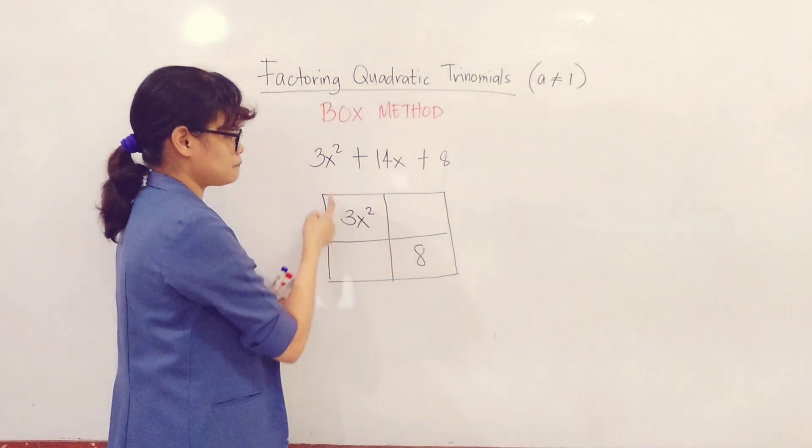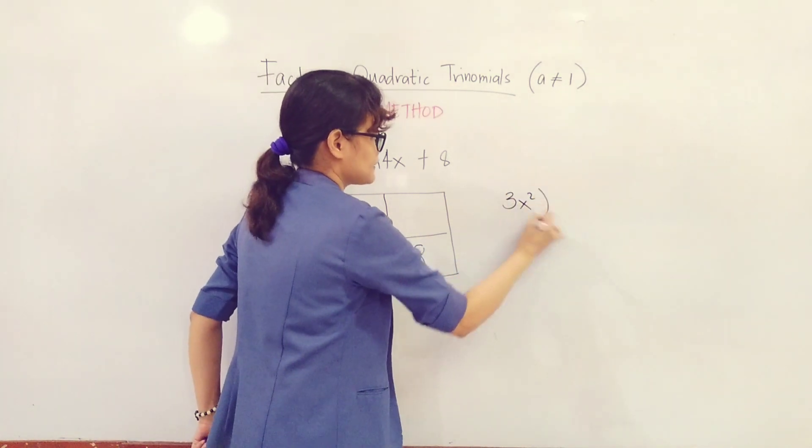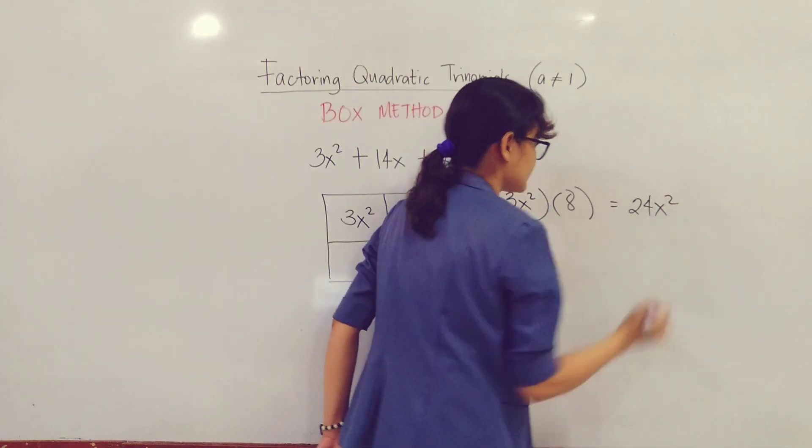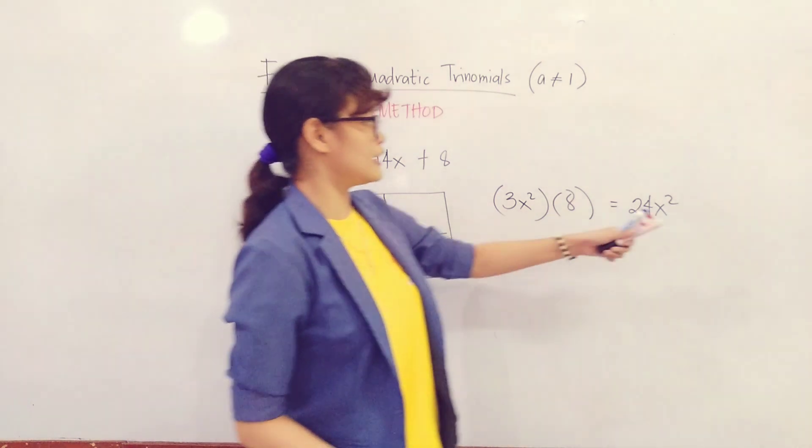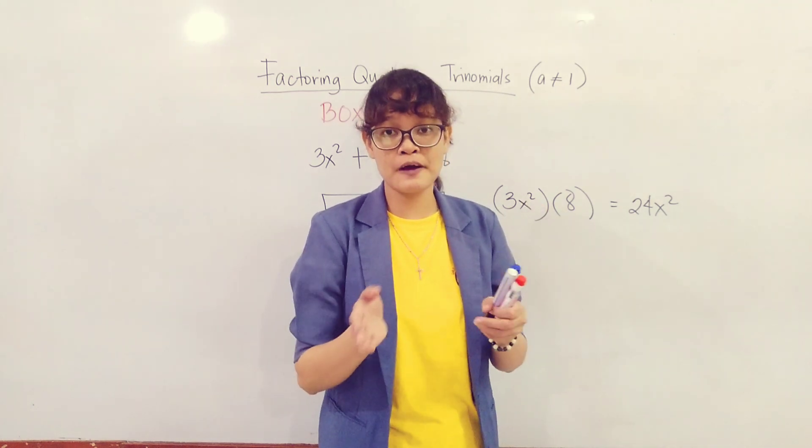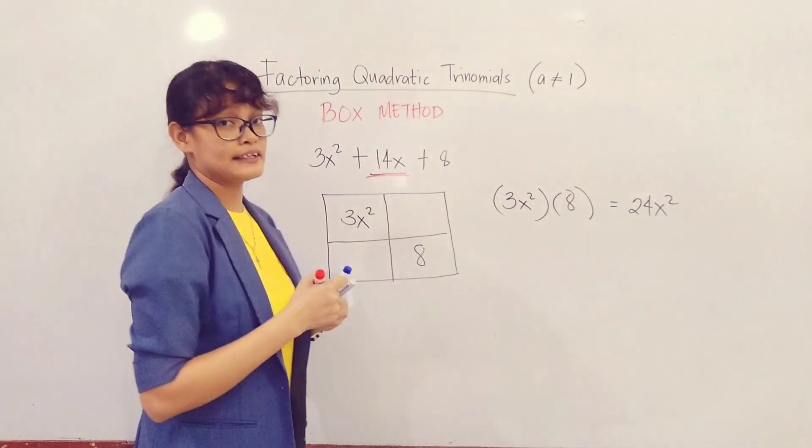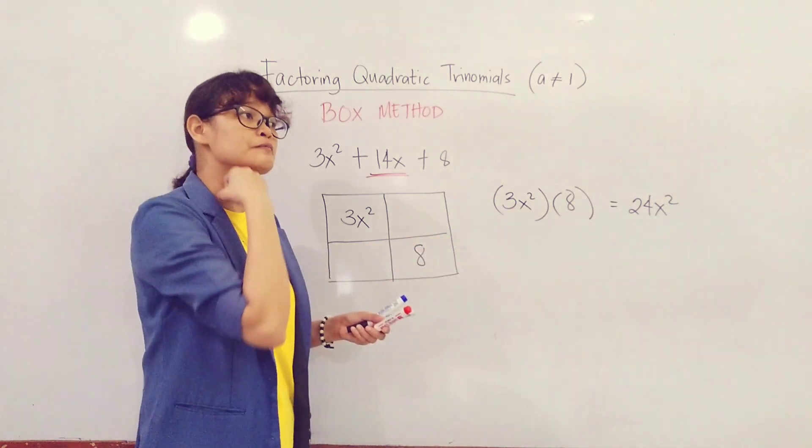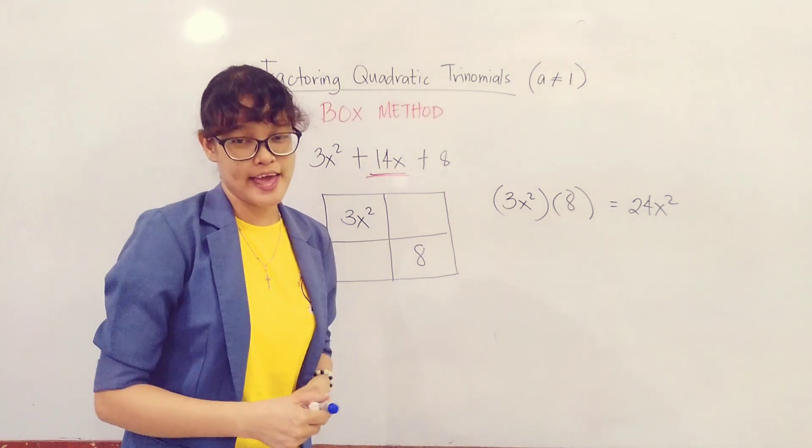Next, the third step is to multiply these two terms. So you have 3x² times 8, that will give you 24x². So after you multiply them, we will factor out 24x². And from its factors, we will choose factors that when added, will equal the middle term of our quadratic trinomial.